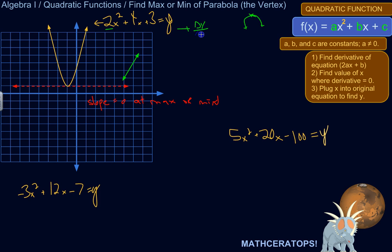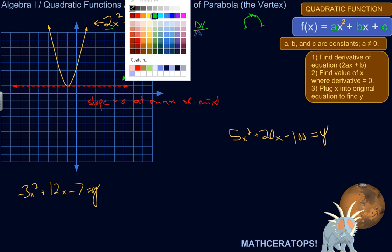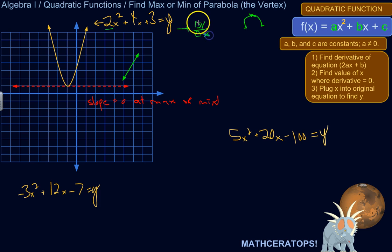The slope is just change in y over change in x, which we could symbolize with deltas like this, or we could just call it dy dx is how they do it in calculus class. So let's do that. So the equation that says what the slope is at any given point on this parabola is just 2 times a times x. So it would be 4x. And then plus b. So b is 4.